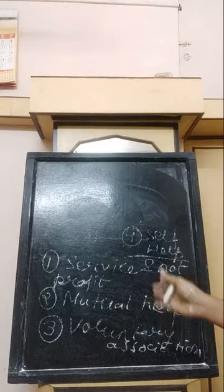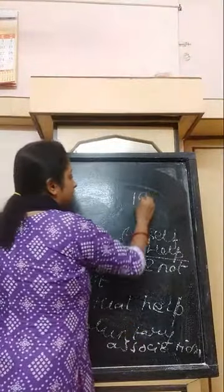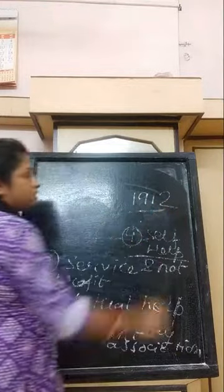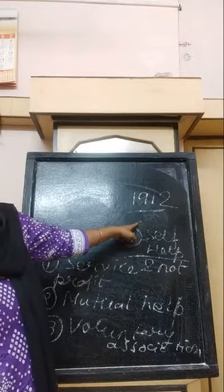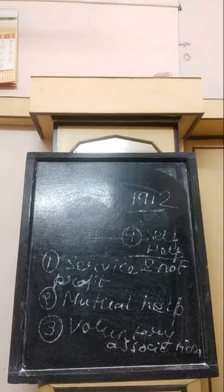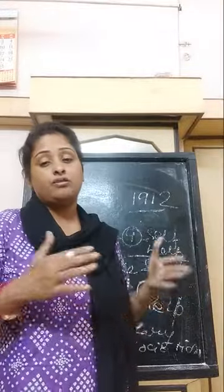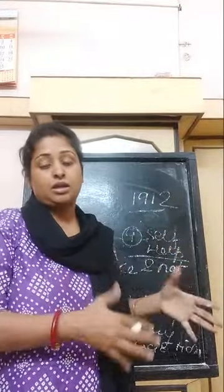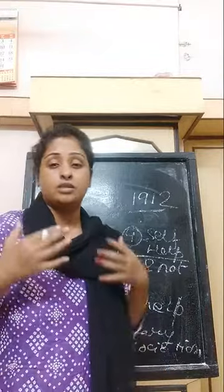This kind of society first came into existence in the year 1912. Please don't forget this year — it will come in the MCQ. Cooperative society is another important form of business unit, like sole proprietorship and partnership.